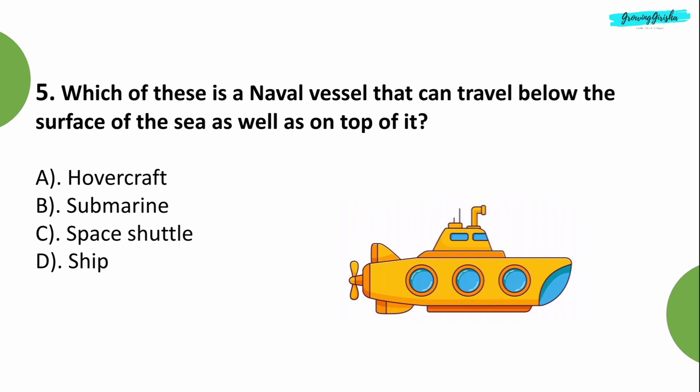Question 5: Which of these is a naval vessel that can travel below the surface of the sea as well as on top of it? Option B: Submarine.